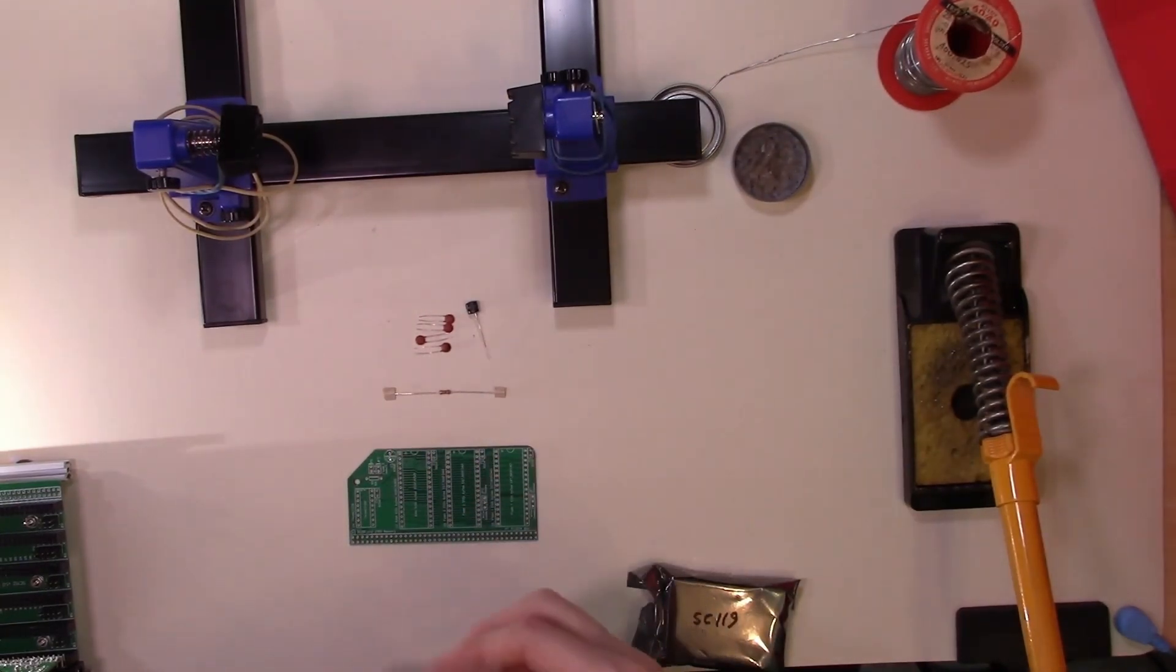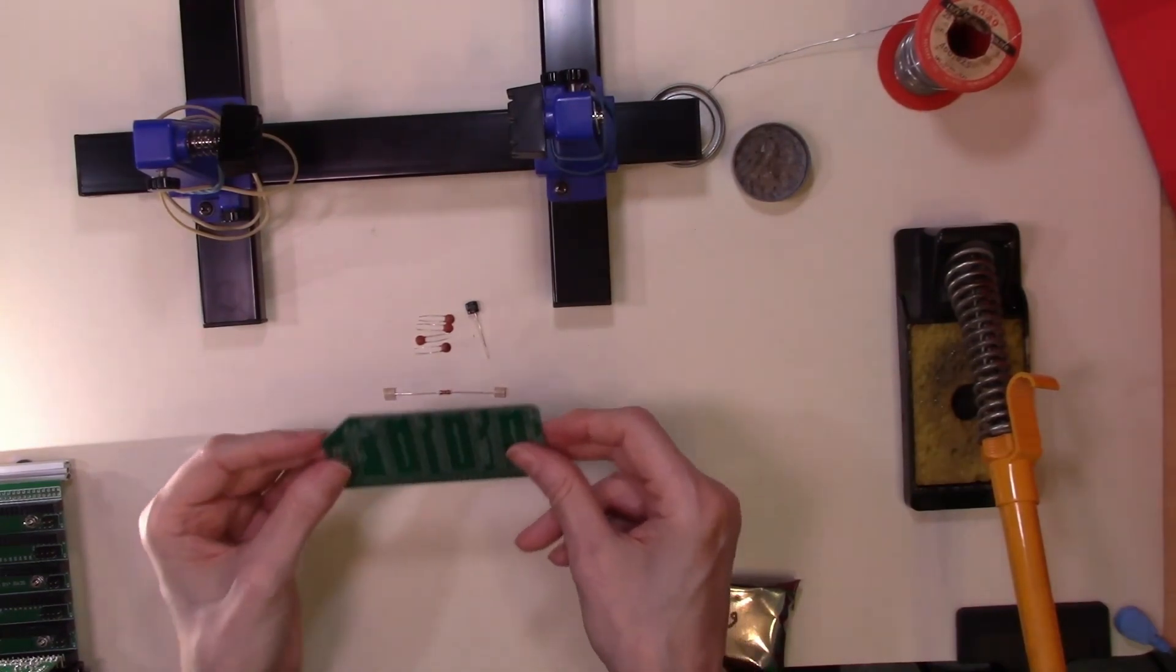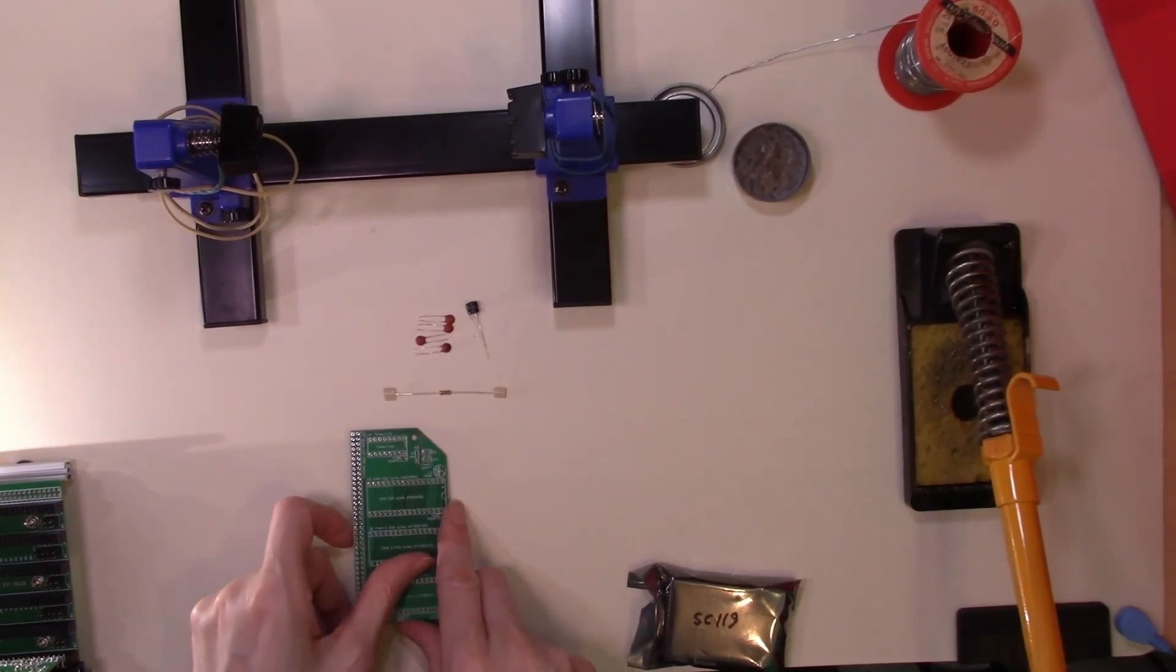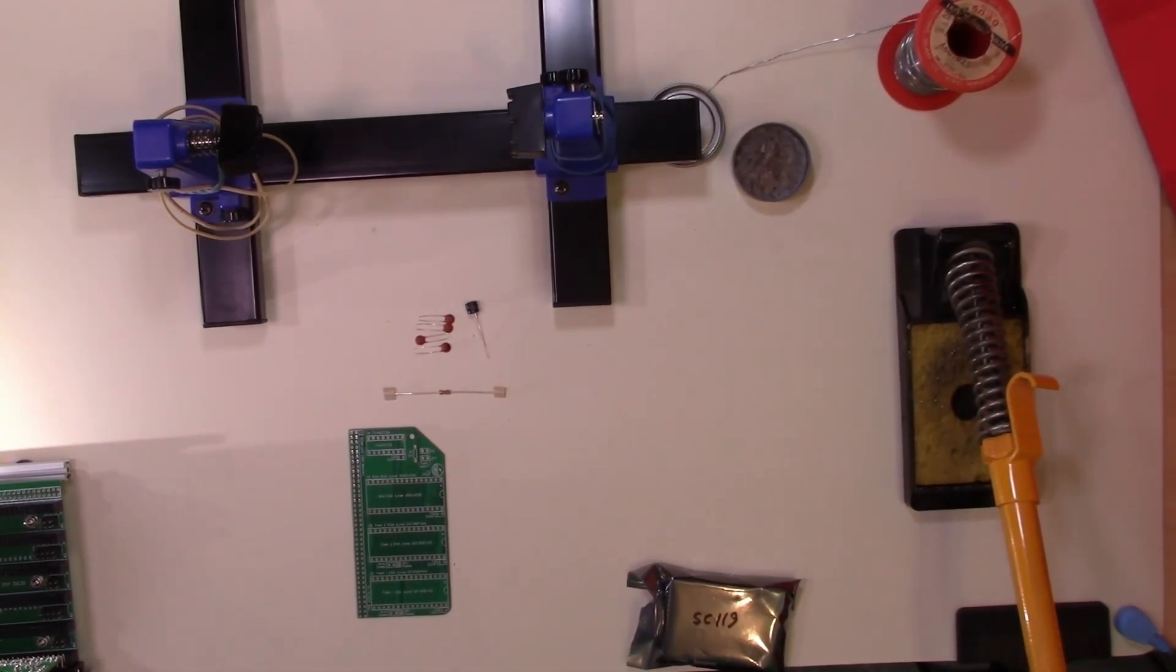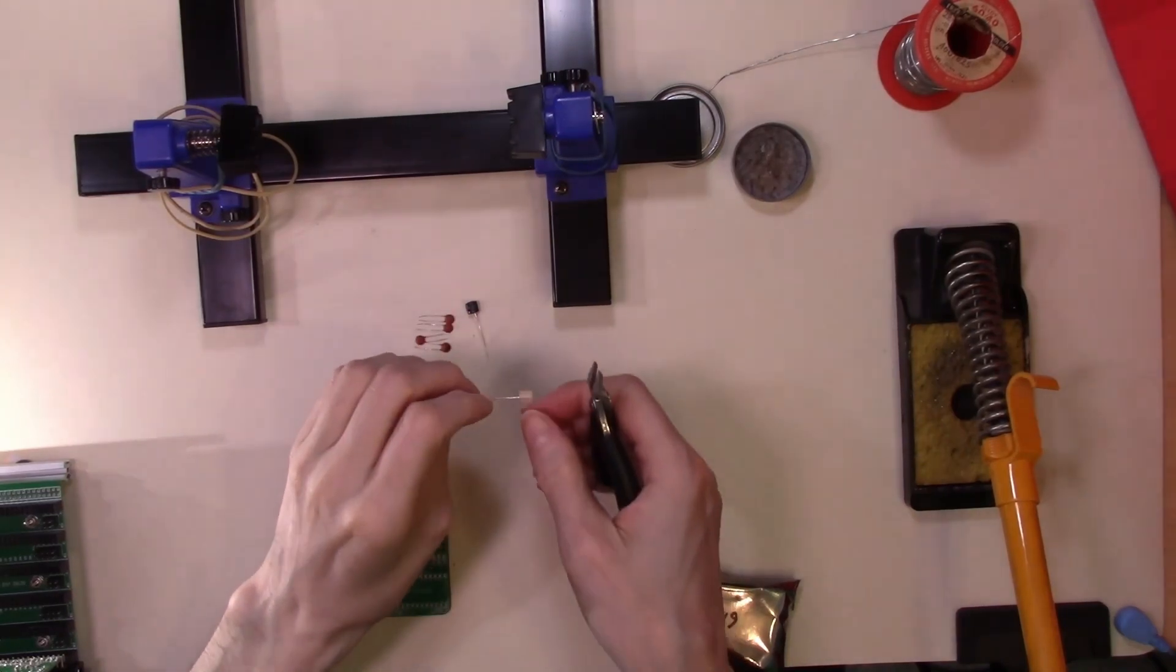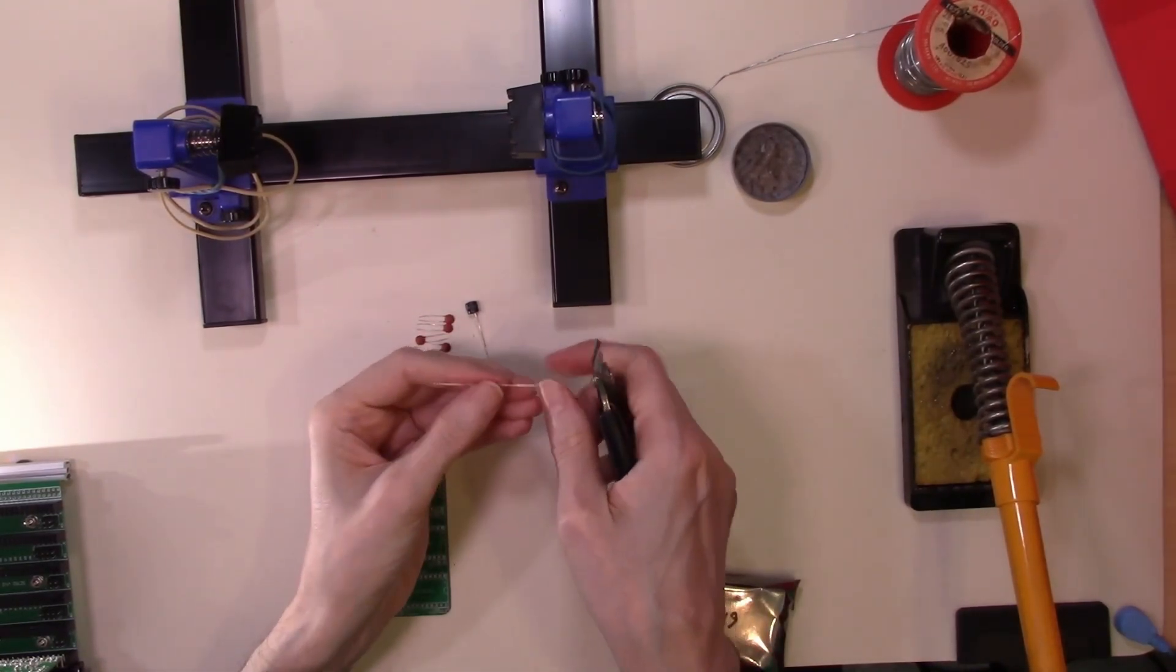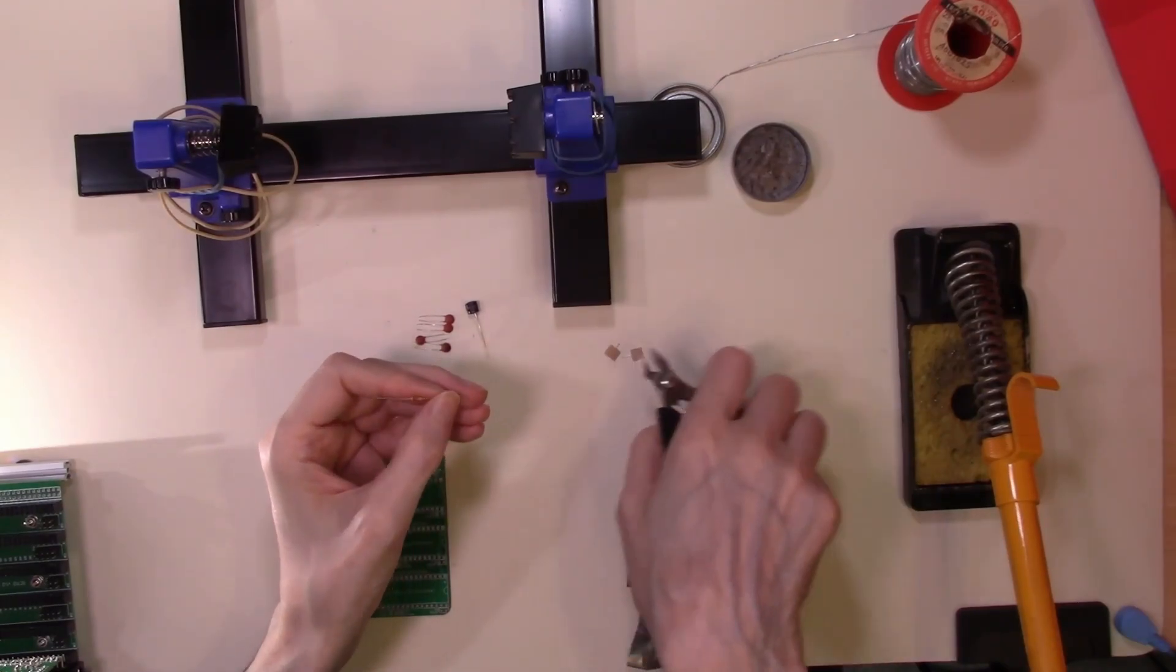I'll just take all the other bits and slide them back into the bag. And we have a single resistor. So resistor R1 goes in at this point in the board. We'll just snip the ends of this and put this into place.